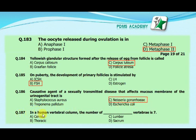Our next MCQ is: in the human vertebral column, the number of vertebrae that is seven — option A: cervical, option B: thoracic, option C: lumbar, option D: sacrum. Our correct answer is A, cervical.